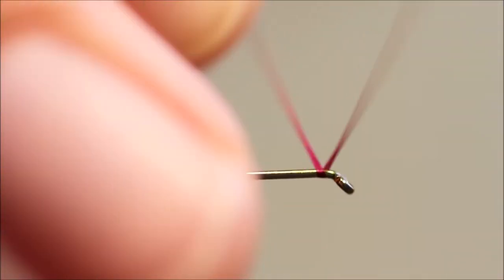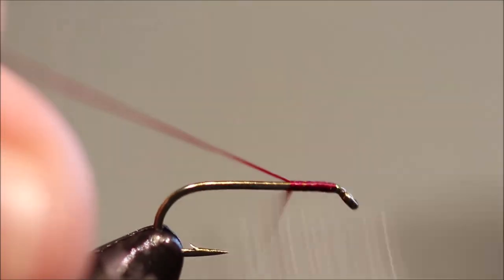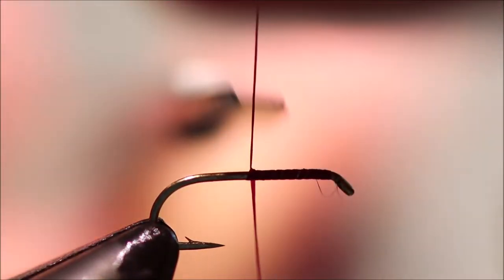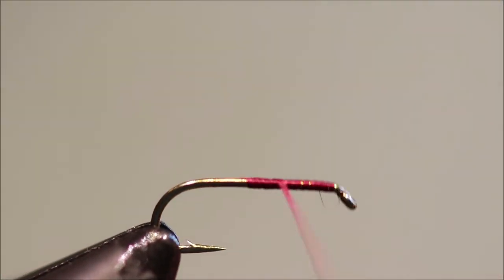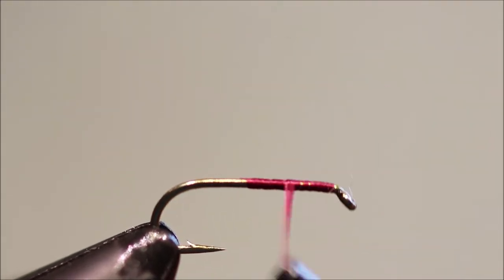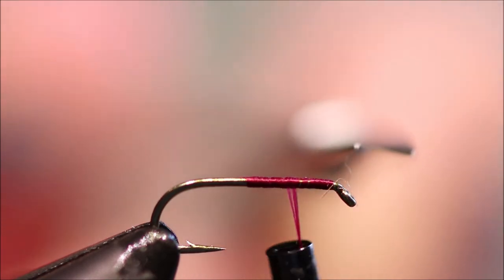I'm going to start my thread. This is a burgundy, claret colour. I'll get a wee bed on and I'll come back to my wing position, which is about a quarter to a third of the way down the shank.